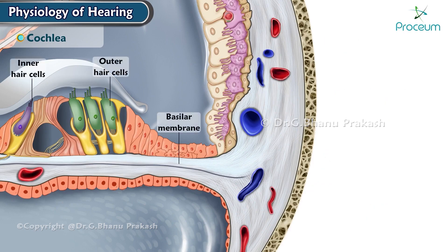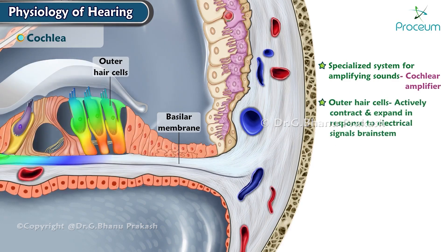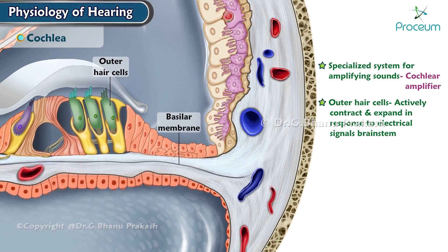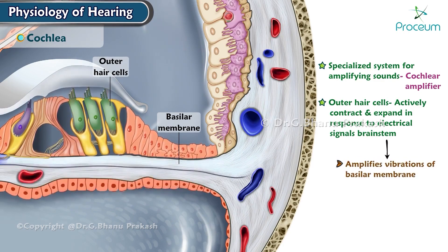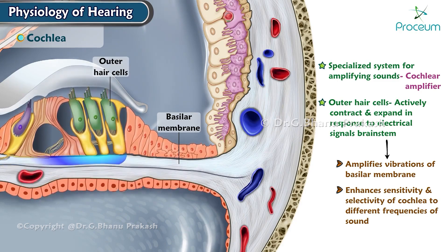The cochlea also has a specialized system for amplifying sounds called the cochlear amplifier. This system involves outer hair cells that are able to actively contract and expand in response to electrical signals from the brain stem. This contraction and expansion amplifies the vibrations of the basilar membrane and enhances the sensitivity and selectivity of the cochlea to different frequencies of sound.